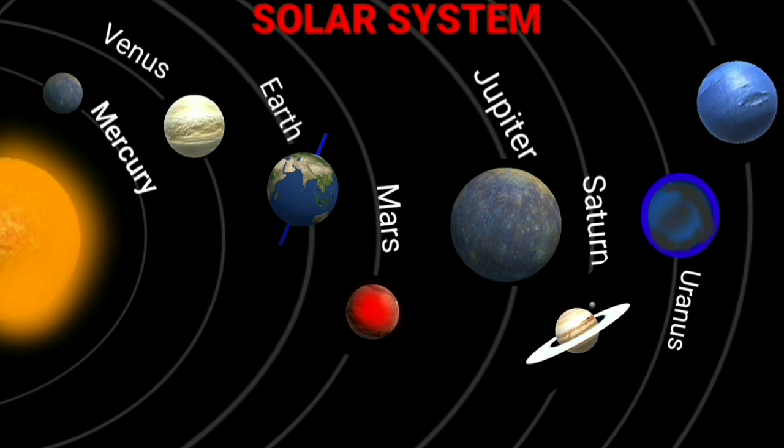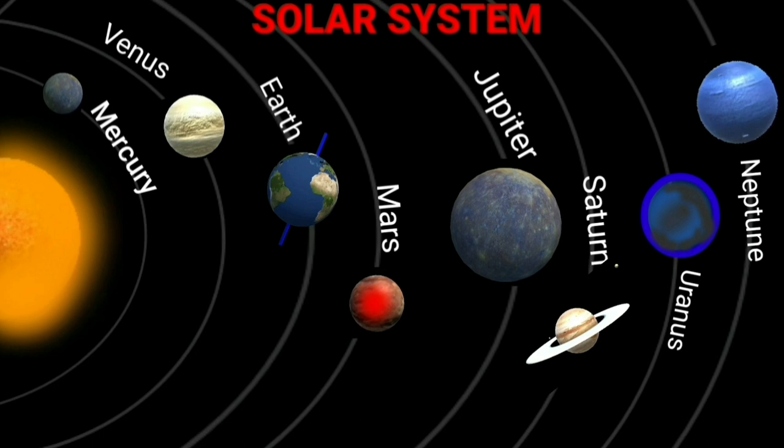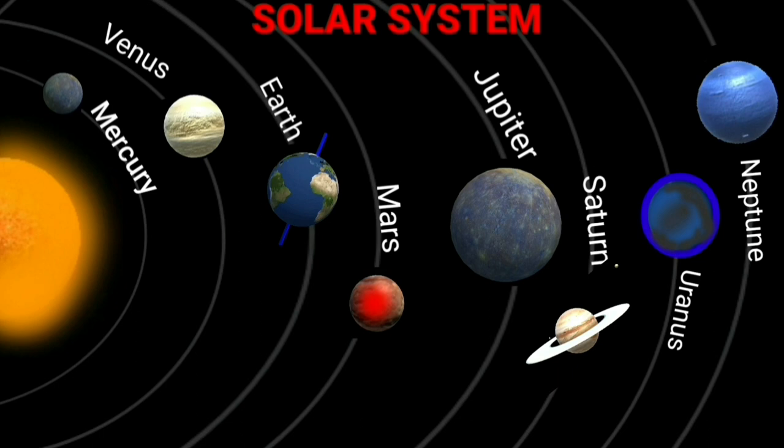Neptune is the eighth planet in terms of its distance from the sun. It has eight satellites revolving around it. It takes 165 years to complete one revolution around the sun.